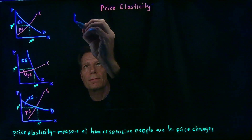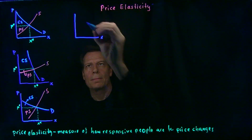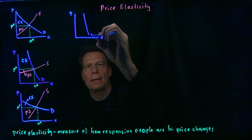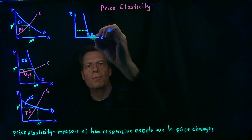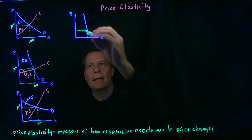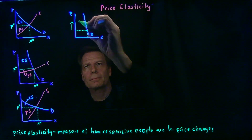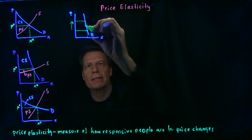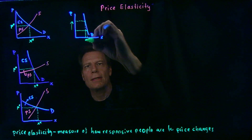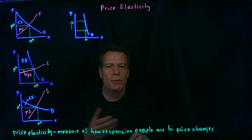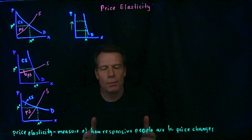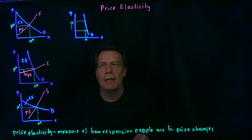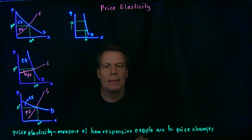Suppose we had a very steep demand curve. Starting at an initial price, we read off the quantity that consumers demand. Now suppose we increase that price by a lot. Even such a large increase in price would cause very little change in the quantity demanded by consumers. We would say that these consumers are relatively unresponsive to price changes — relatively price inelastic.